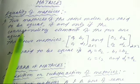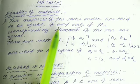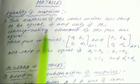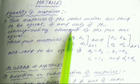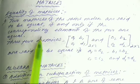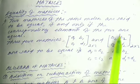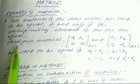So, we will see the equality of matrices. Two matrices of the same order are said to be equal if and only if the corresponding elements of the two matrices are equal.